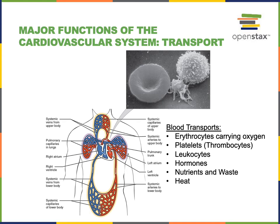Oxygen is transported inside of the erythrocytes, and oxygen is being transported from the lungs to tissues throughout the body that use that oxygen as a nutrient necessary for aerobic cellular respiration.